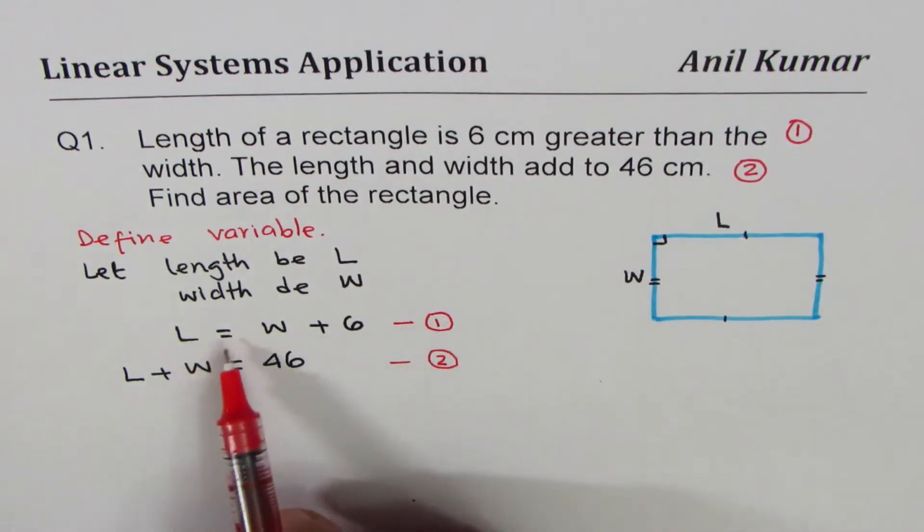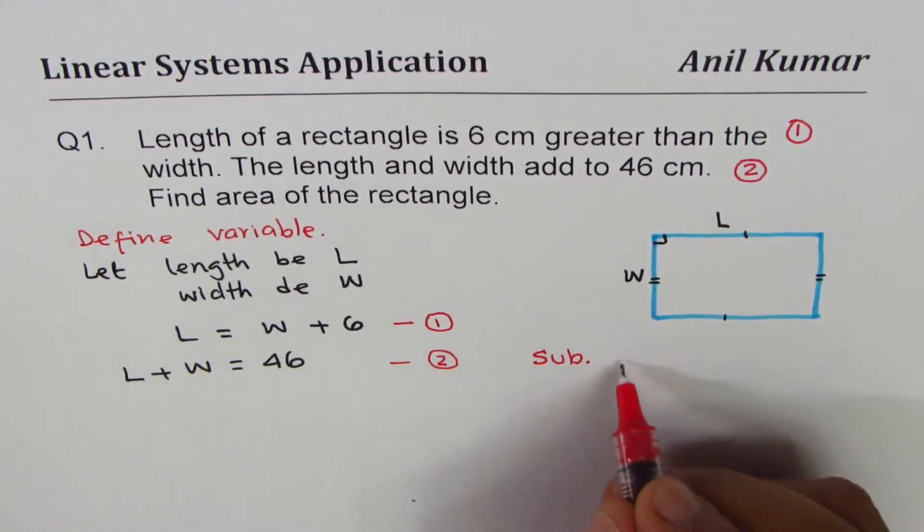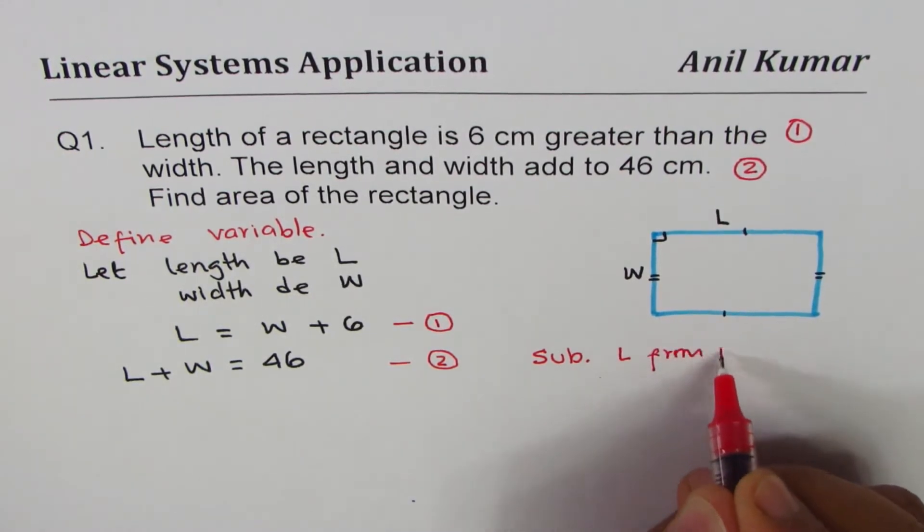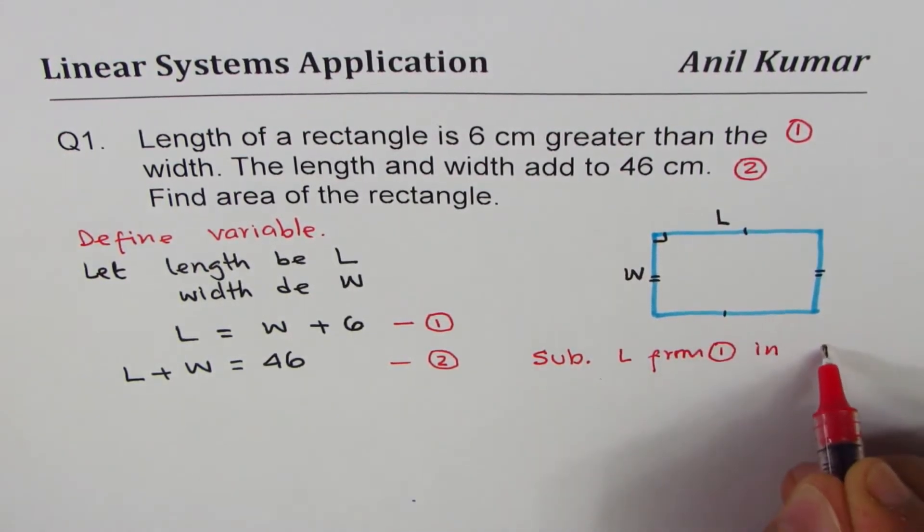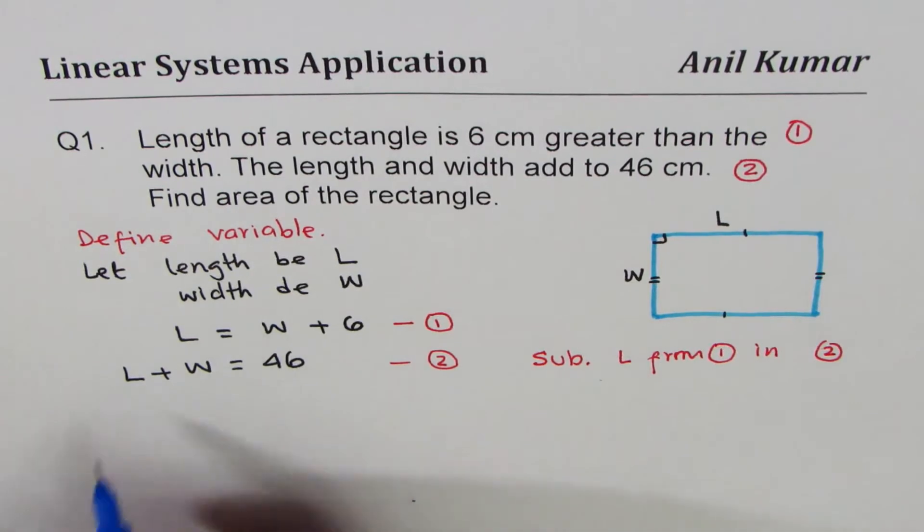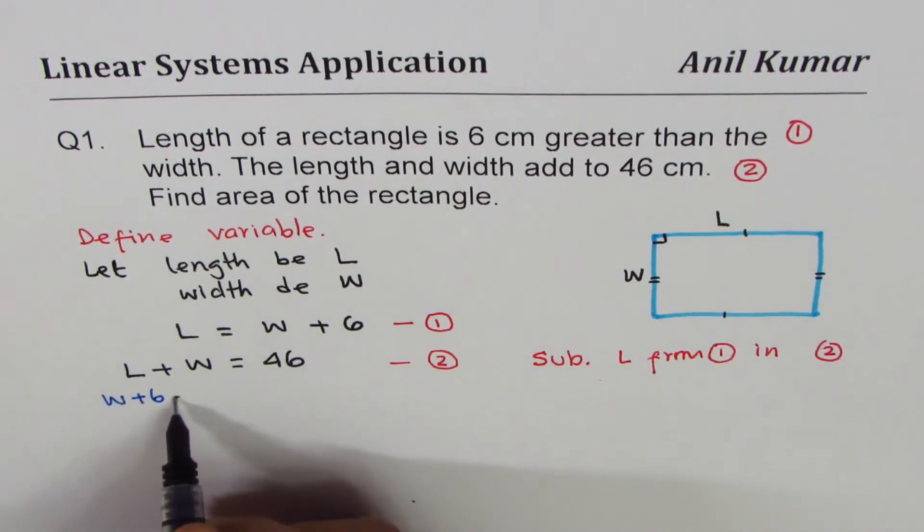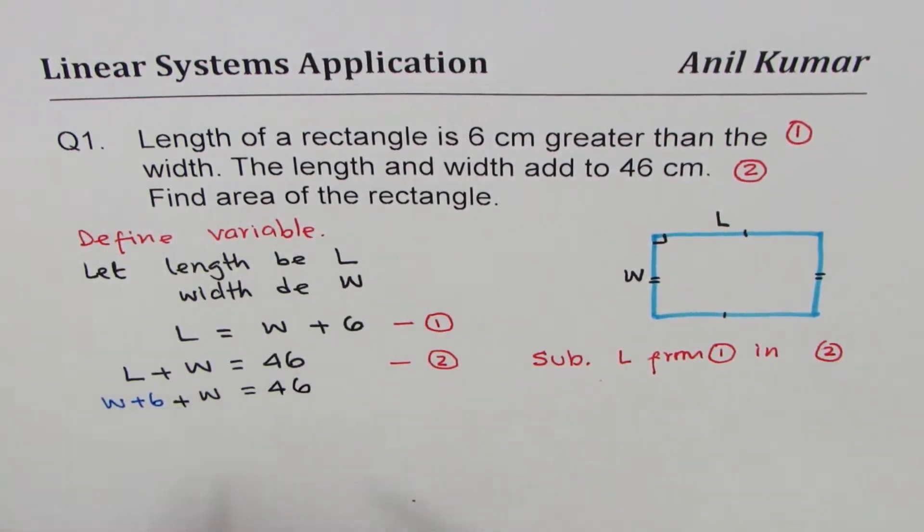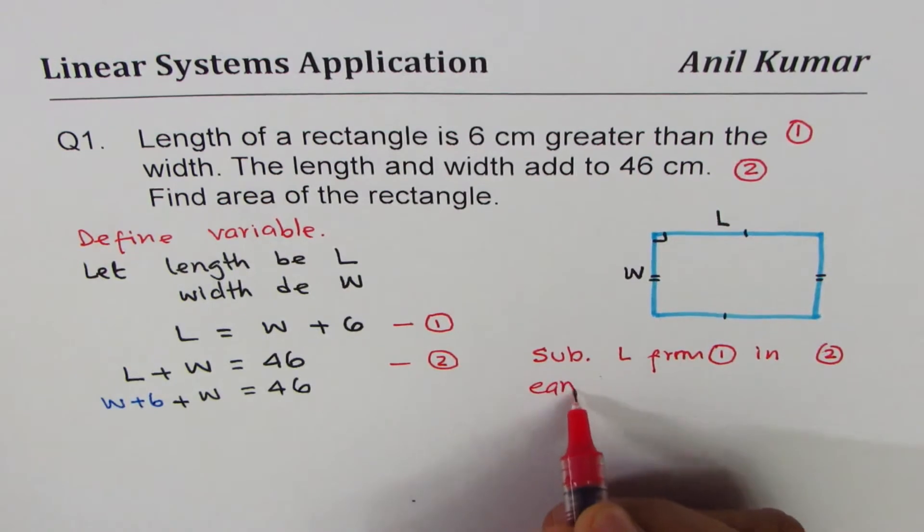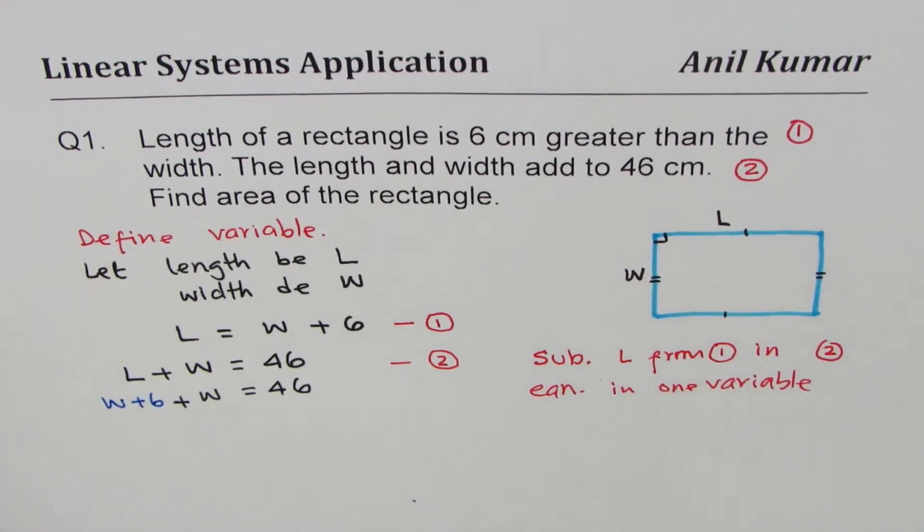From equation one we know what L is in terms of width, so we can substitute. What we will do now is substitute L from equation 1 into equation 2. L is W + 6, so we'll replace this L with W + 6. That is a substitution.